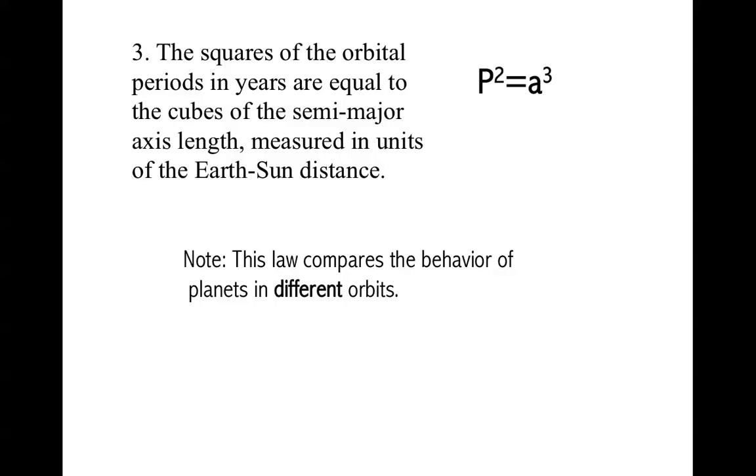The third law says that the squares of the orbital periods in years equal the cubes of the semi-major axis length measured in units of the Earth-Sun distance. We write this as P², where P is the orbital period, equals A³, where A is the semi-major axis.